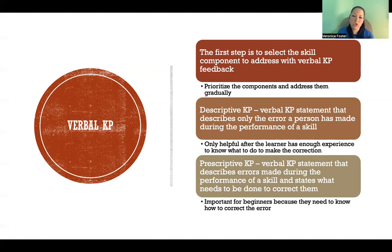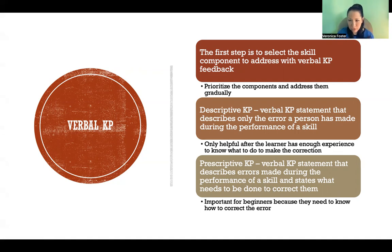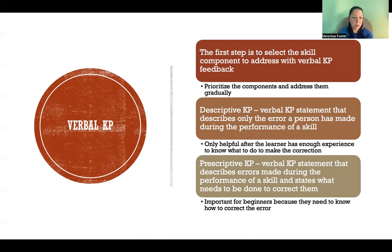We can give descriptive KP or prescriptive KP. Descriptive means that you are simply describing the error a person made and not necessarily talking about how to fix it — just saying, here's what happened in that performance. Like maybe at the end of the execution you say, your hips were flexed too far, or you were bent over too much. You're giving feedback about their performance of the skill without any information about correcting it.